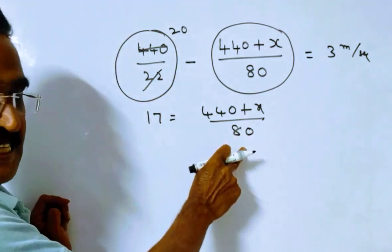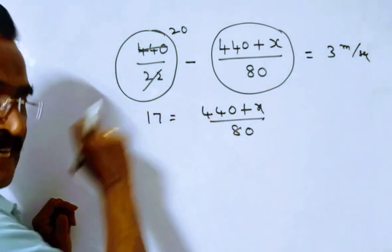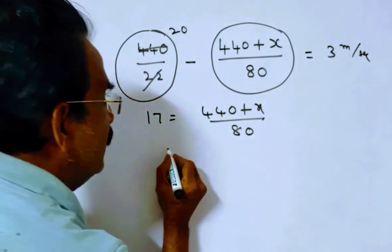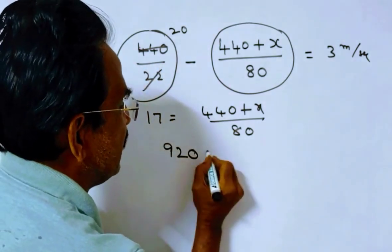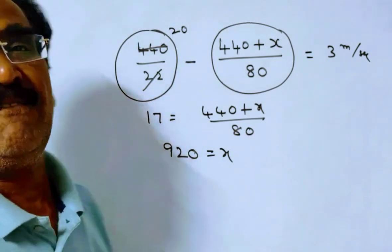17 times 80 equals 1360. 1360 minus 440 equals 920, which is the length of the platform.